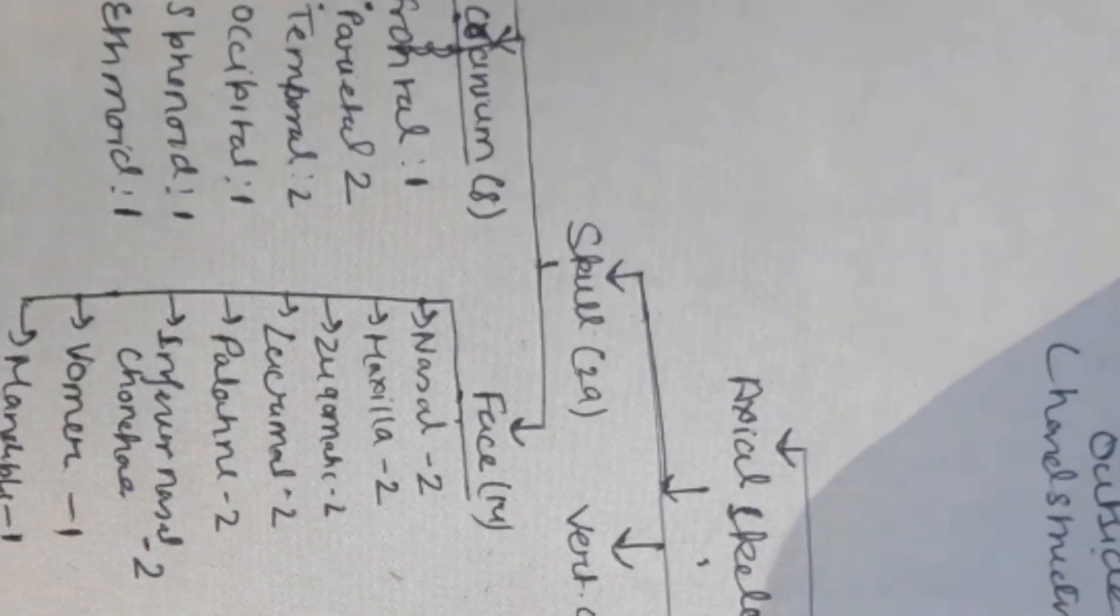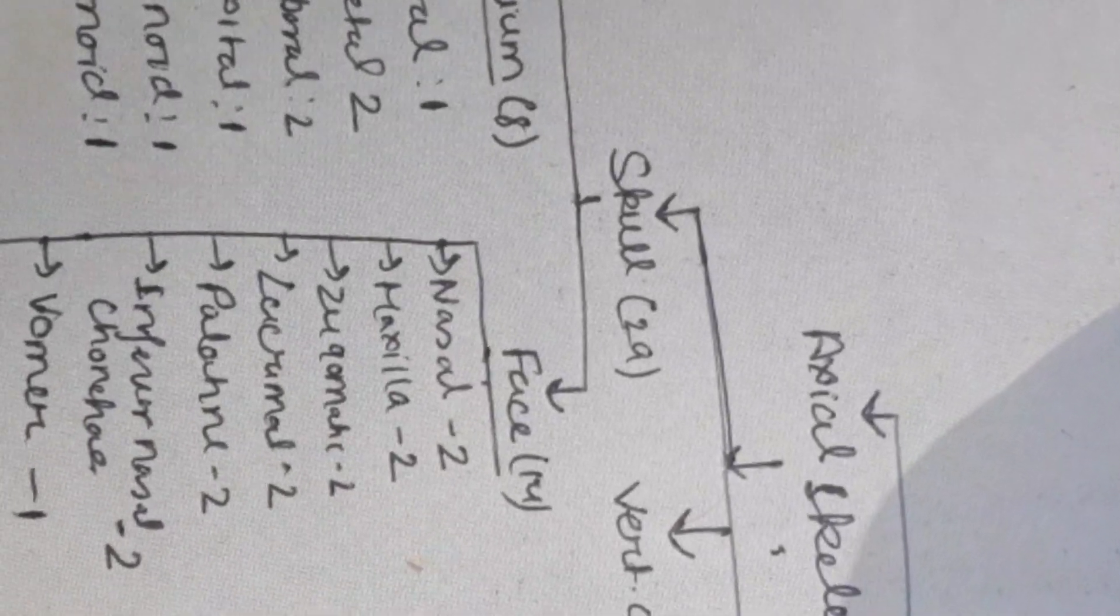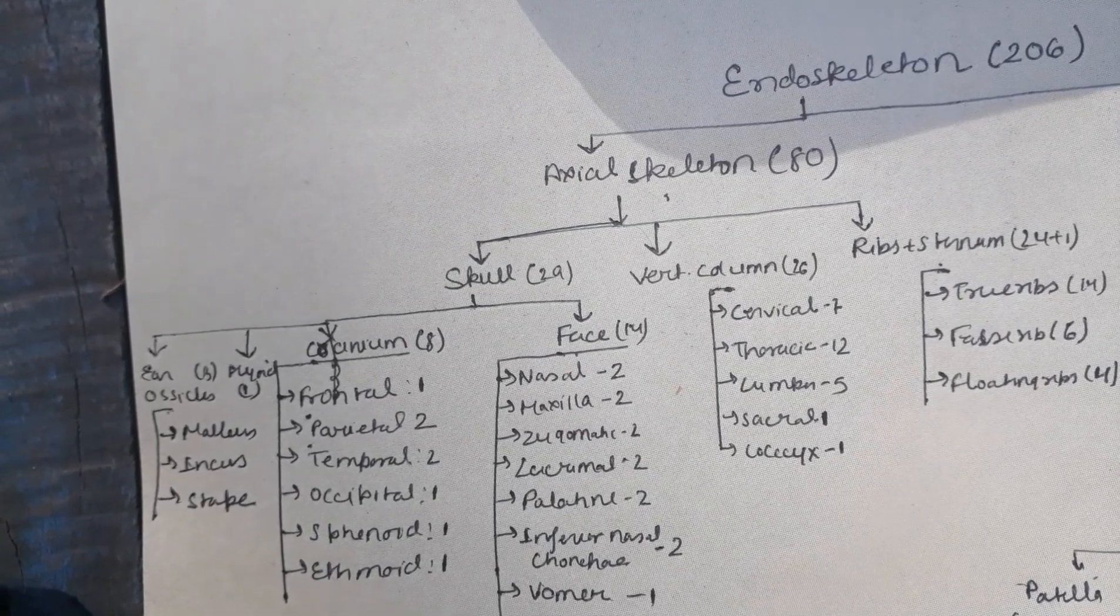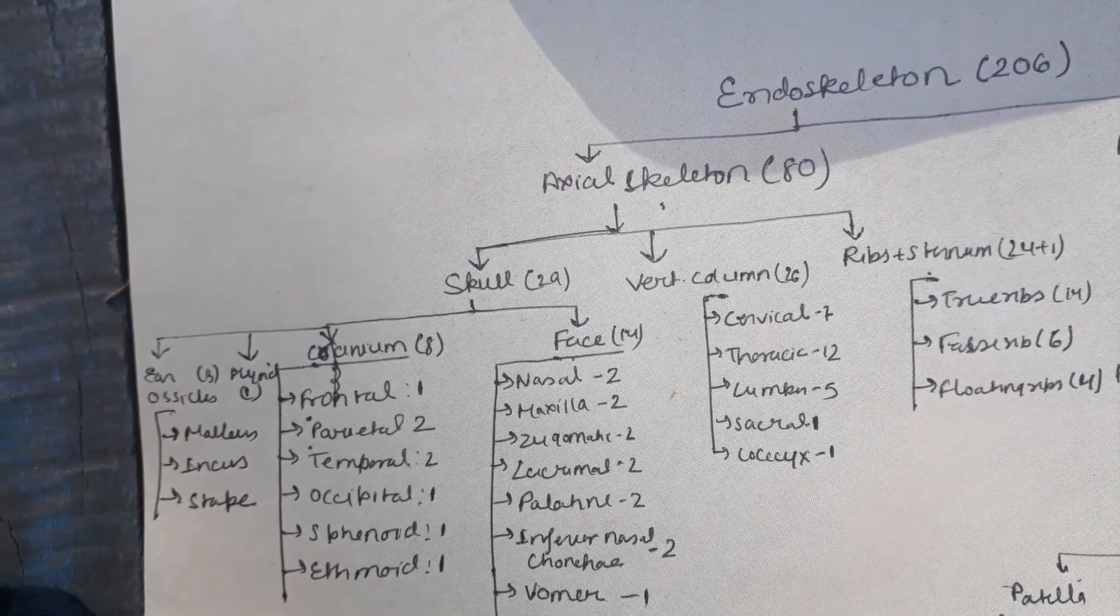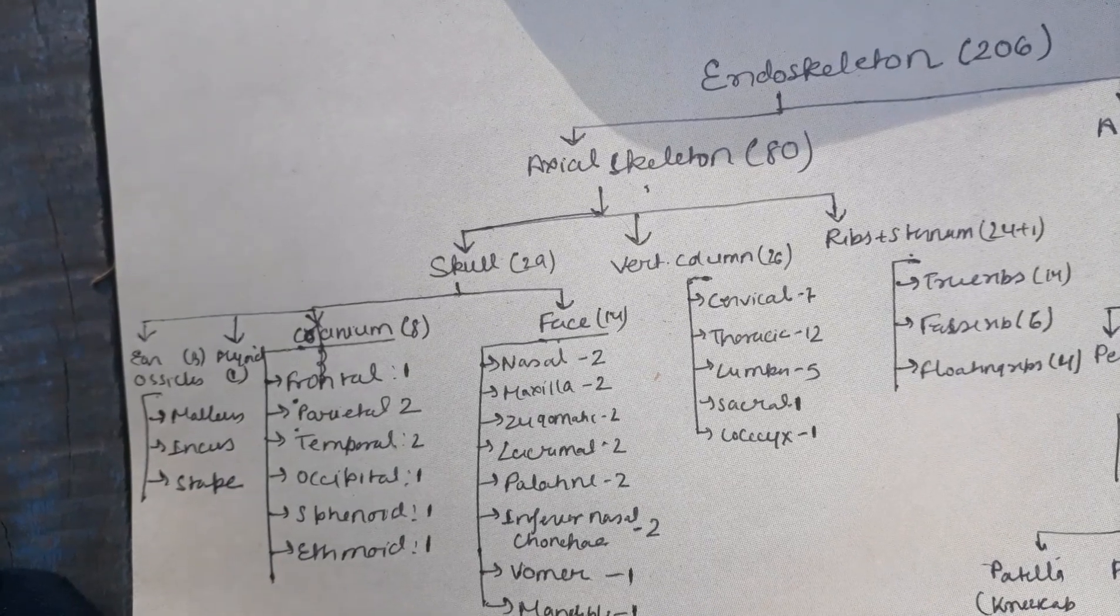Coming back to skull, it has 29 bones which include ear ossicles, then hyoid, which is one in number, then comes cranial bones, which are eight in number.